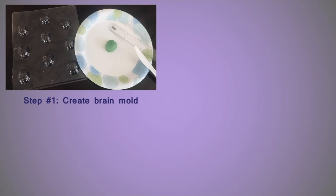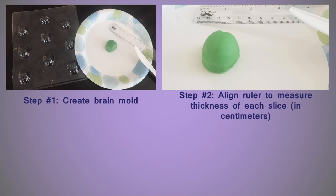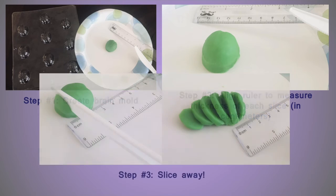First, students will create their own brain molds out of Play-Doh, and then practice slicing these molds into half or one centimeter thick slices to mirror the process of slicing a frozen brain into micrometer thin slices using a cryostat.